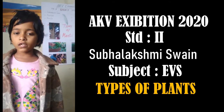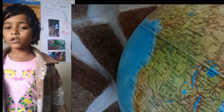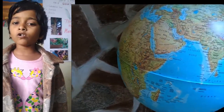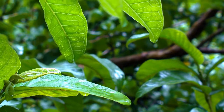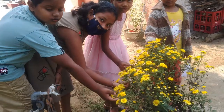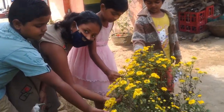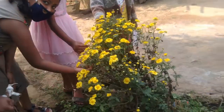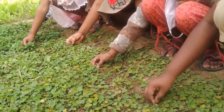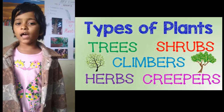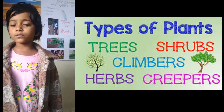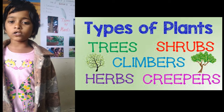We cannot think about the world without plants. We see a variety of plants around us. Some are big and some are small. There are several types of plants like trees, shrubs, climbers, and creepers.